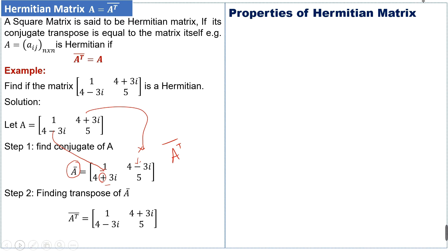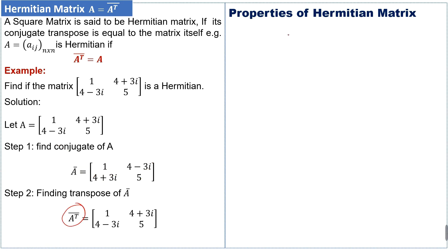In the transpose, we write the rows as columns. For example: 1, 4 minus 3i, and 4 plus 3i, and 5. We can see that the conjugate transpose of matrix A is similar to matrix A — meaning the conjugate transpose of A equals A itself. Therefore, the given matrix is a Hermitian matrix.